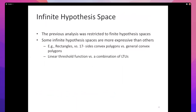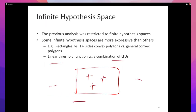The key observation when we start thinking about infinite hypothesis spaces is that intuitively, some infinite hypothesis spaces are more expressive than others. Imagine a learning problem where all points inside a box are plus and everything outside is minus. My goal is to discover the best rectangle that can perfectly encapsulate all the positive examples.